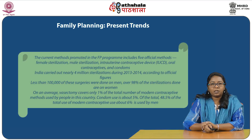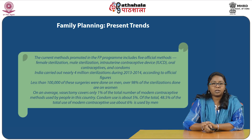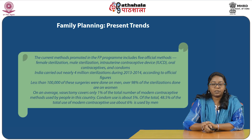The current methods promoted in the family planning program include five official methods: female sterilization, male sterilization, intrauterine contraceptive device (IUCD), oral contraceptives, and condoms. India carried out nearly 4 million sterilizations during 2013 to 2014 according to official figures. Less than 1 lakh of these surgeries were done on men, and over 98% of sterilizations were done on women. On average, vasectomy covers only 1% of the total number of modern contraceptive methods used in this country. Condom use is about 5% of the total, and about 6% of modern contraceptive use is by men.